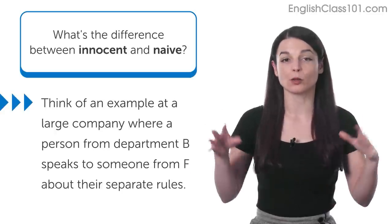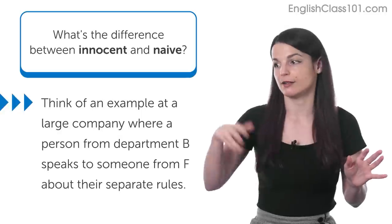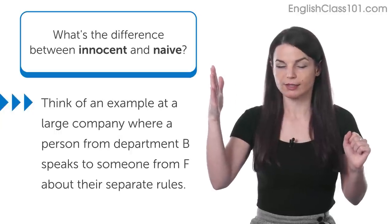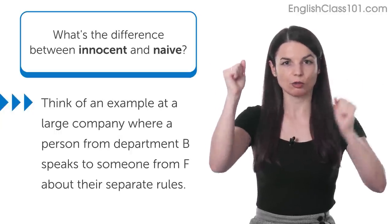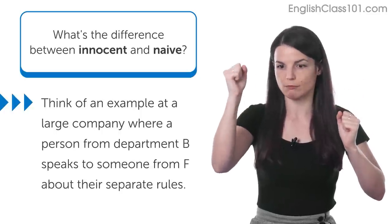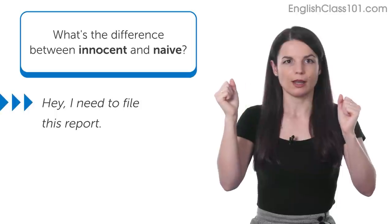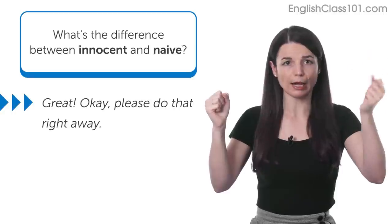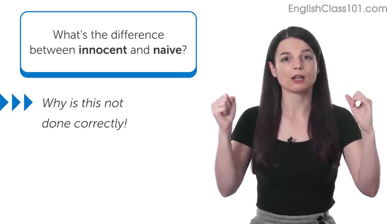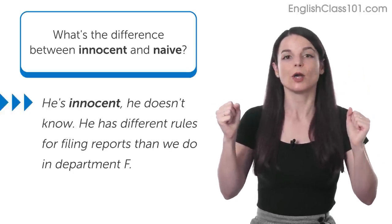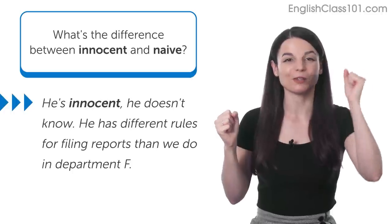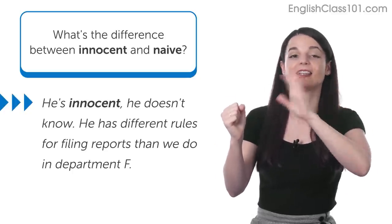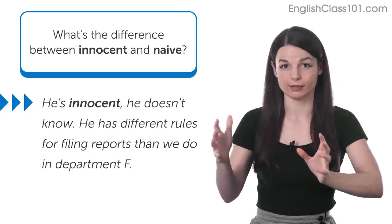So, let's say that there's somebody who works in a really big company. There are lots of different departments. There's A, and B, and C, and D, and there's a bunch of them. So, let's say that some guy who works in Department B has to work with someone from Department F, okay? And they each have different rules in the places where they work. So, this guy, B, goes to F and says, hey, I need to file this report. And F says, great, okay, please do that right away. And so, B does it, and there's a mistake in it. And F gets really, really angry. It's like, why is this not done correctly? And F's co-workers might go, ah, he's innocent. B guy is innocent. He doesn't know. B has different rules for filing reports than we do in Department F.